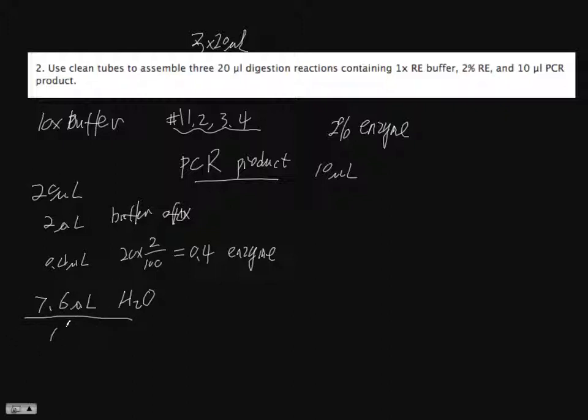This adds up and should be 10 microliters. The other 10 will be PCR product. Now we need to make a master mix.